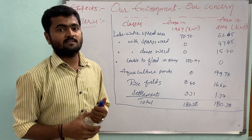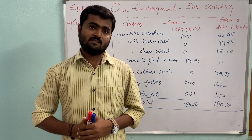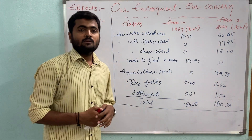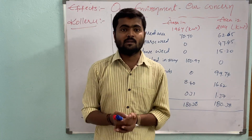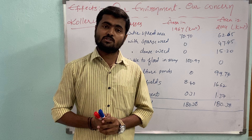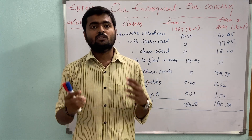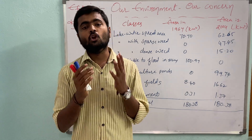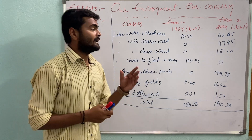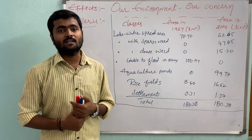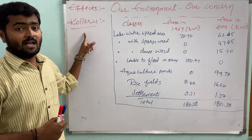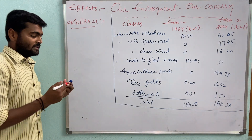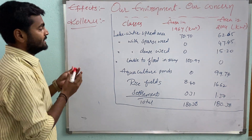We will discuss the consequences of cutting forests and occupying water bodies, with the example of the story of Kolleru. Freshwater bodies supply a lot of nutritional sources to the poorest people worldwide. Kolleru is one of the largest freshwater lakes in India, located between West Godavari and Krishna districts.